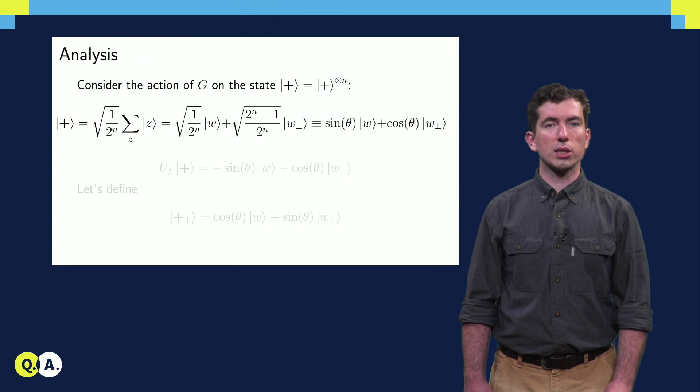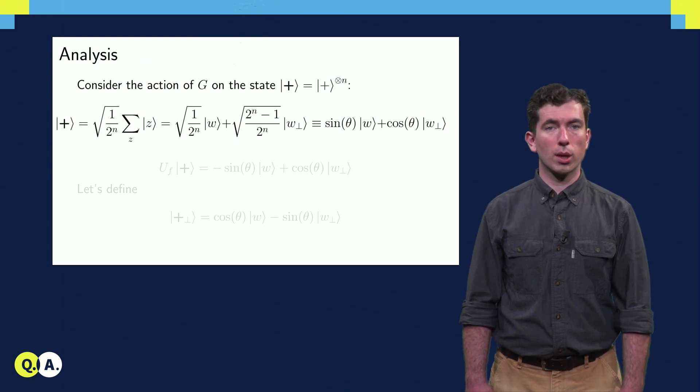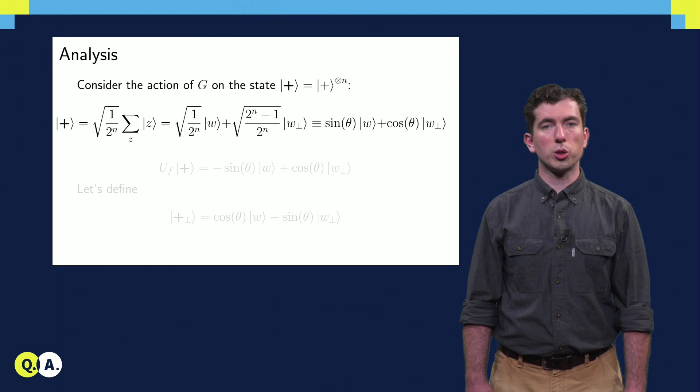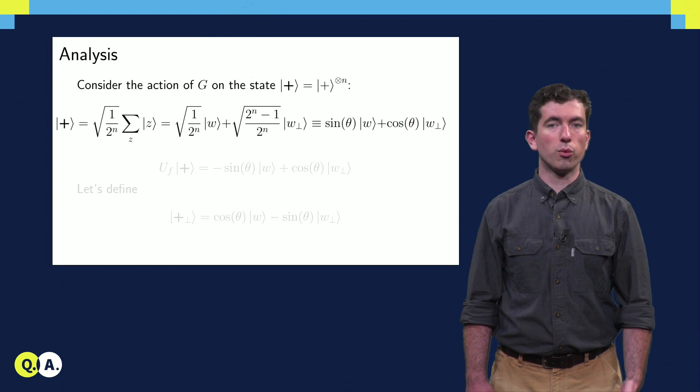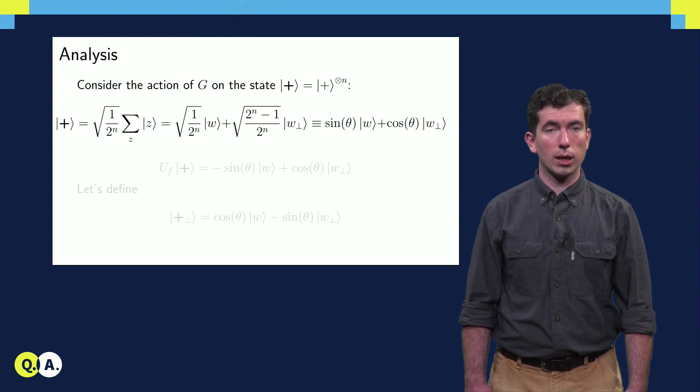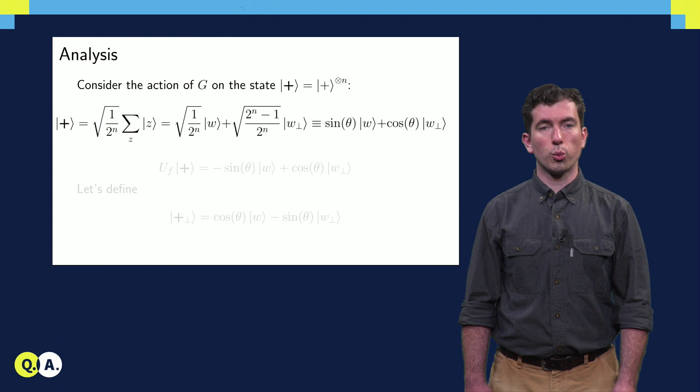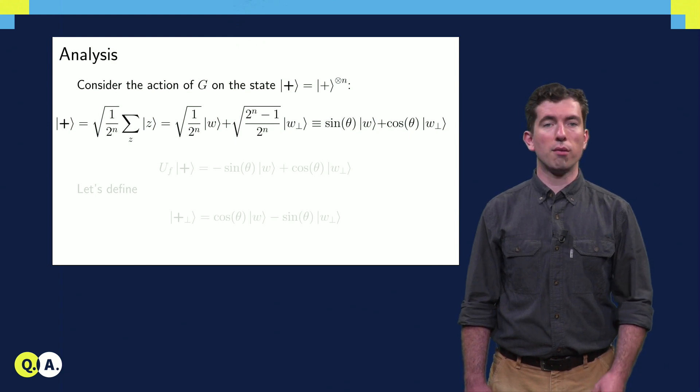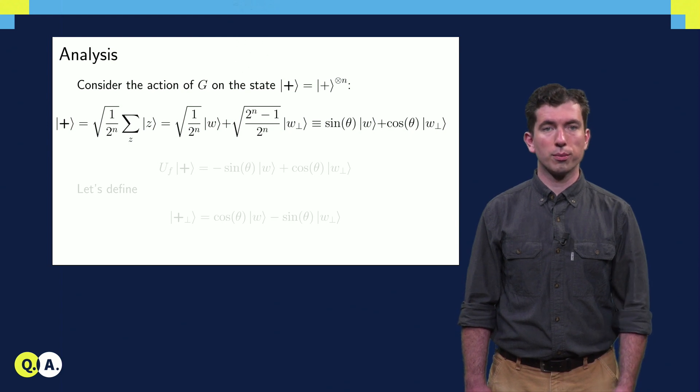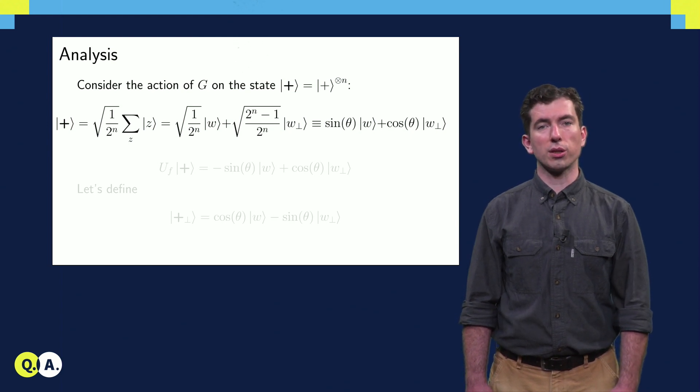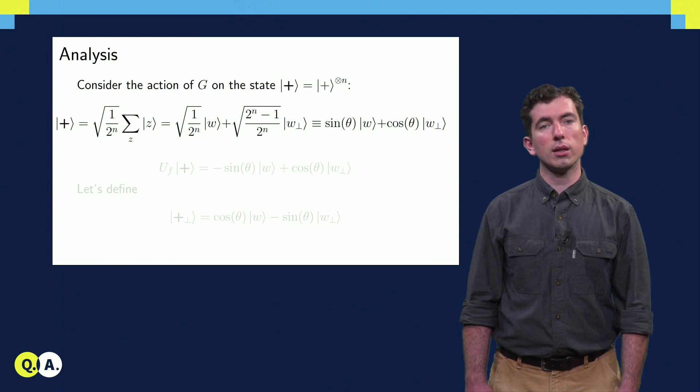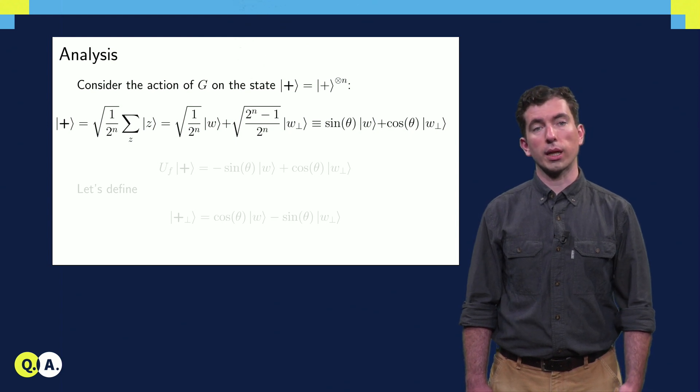First, let's write the all-plus state out neatly. We can see that the all-plus state is a uniform superposition over all states in the Z basis, and that this necessarily includes W, regardless of what W actually is. There's also another term, which is proportional to W perp, which is a uniform superposition of everything in the Z basis that's orthogonal to W. We're going to write the coefficients of this wave function as angles to simplify our calculation later on.